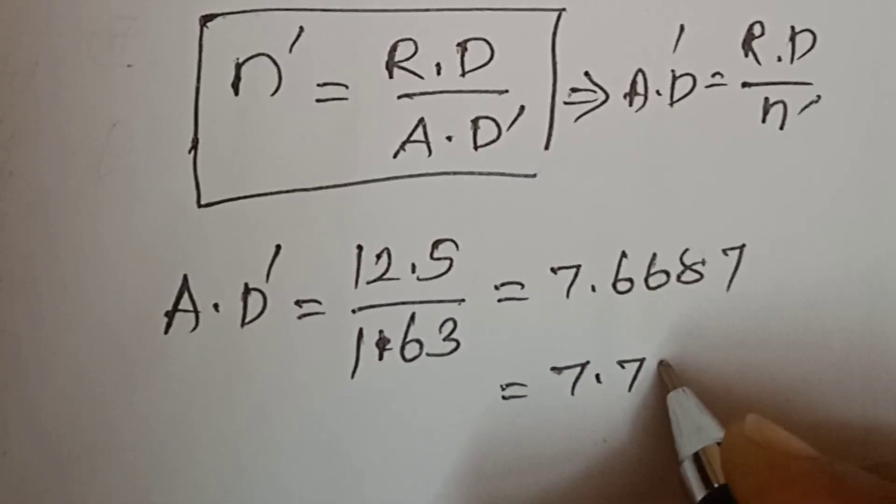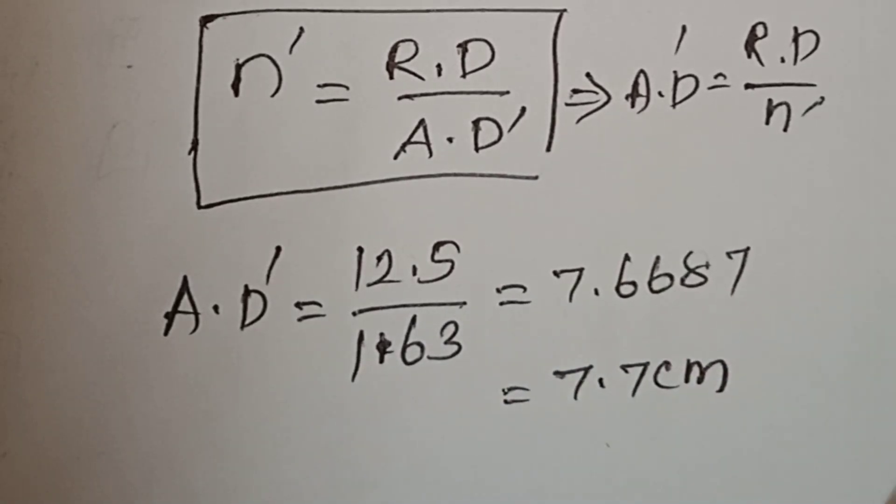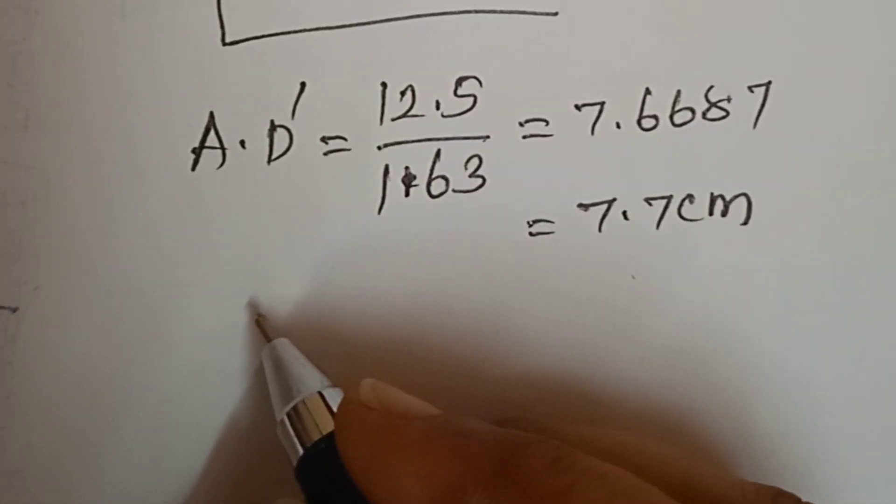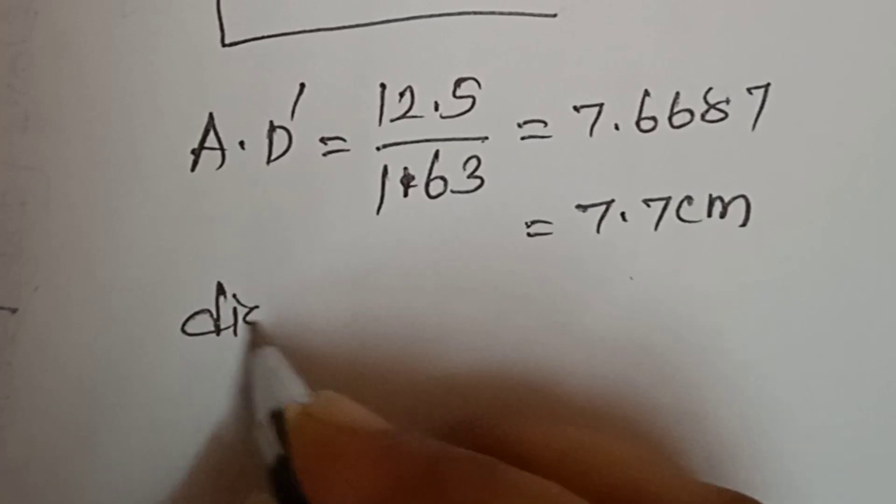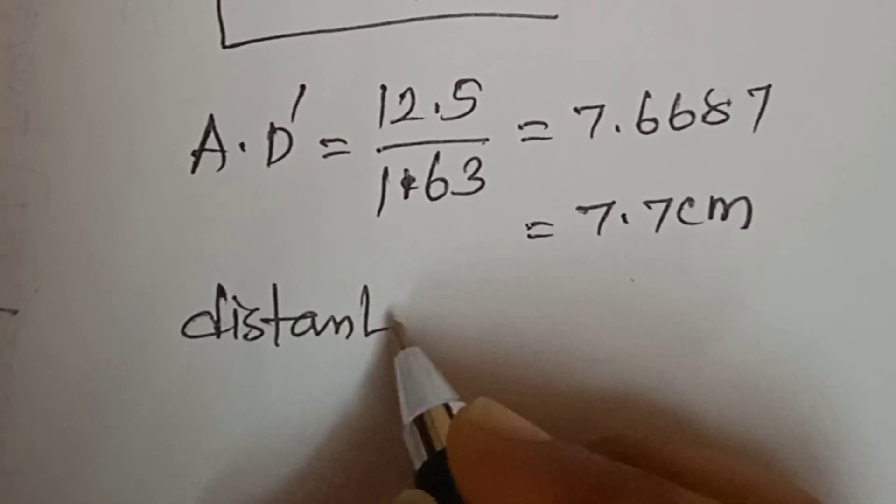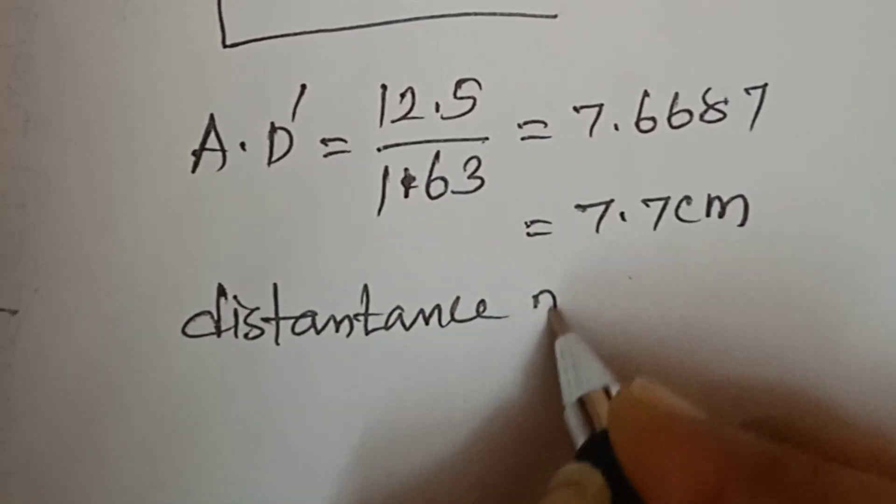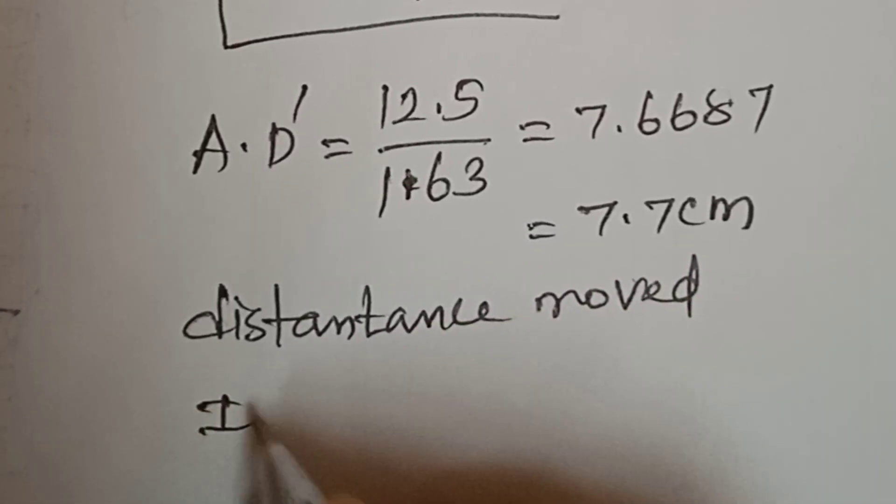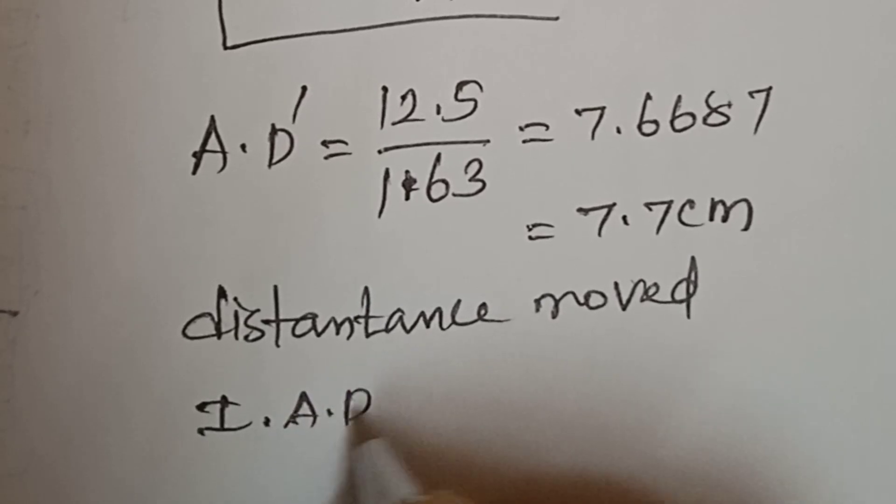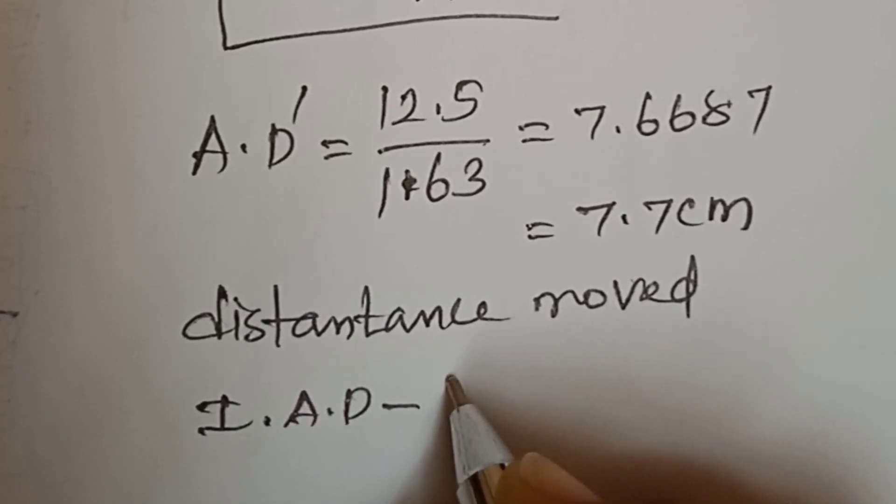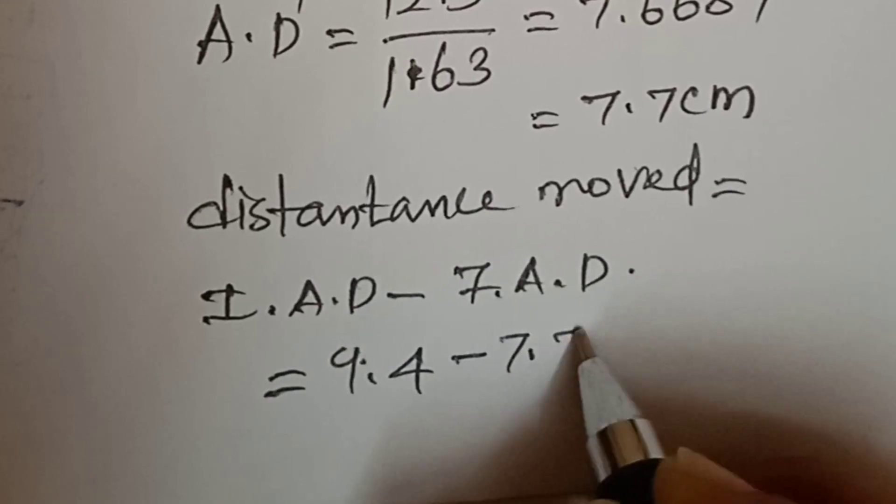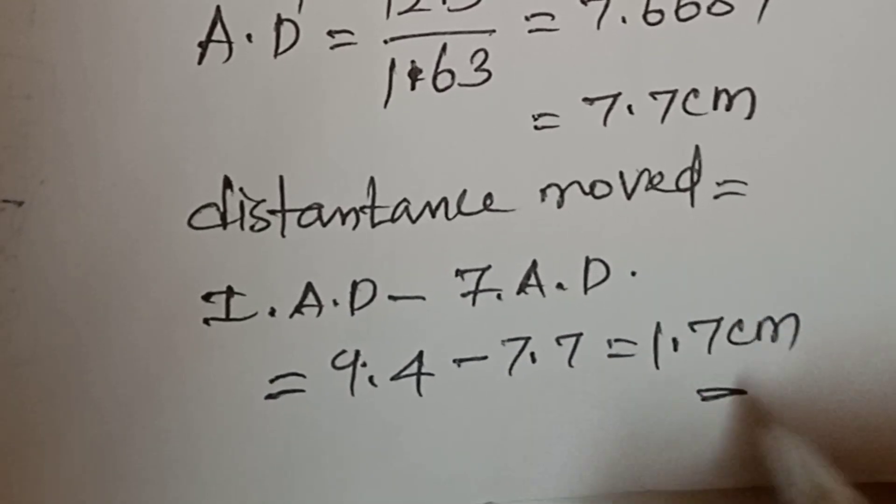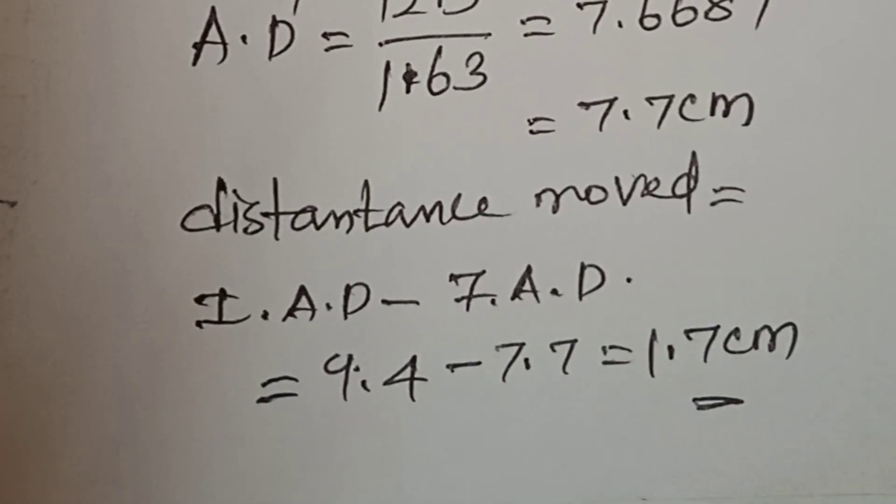Initially, the microscope sees the needle at 9.4 cm. With the new liquid, it's at 7.7 cm. The distance moved equals initial apparent depth minus final apparent depth: 9.4 minus 7.7 equals 1.7 cm. So the microscope must be moved 1.7 cm to focus on the needle again.